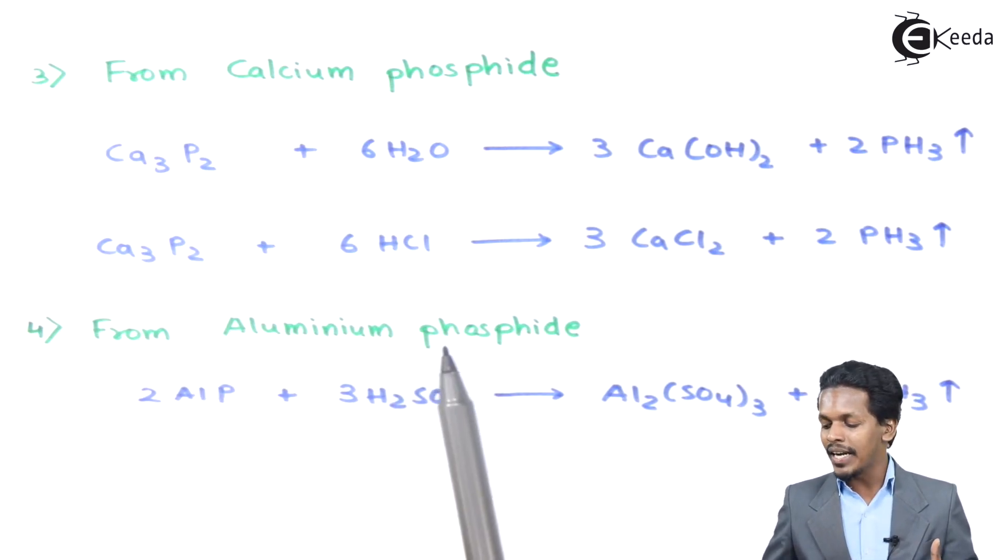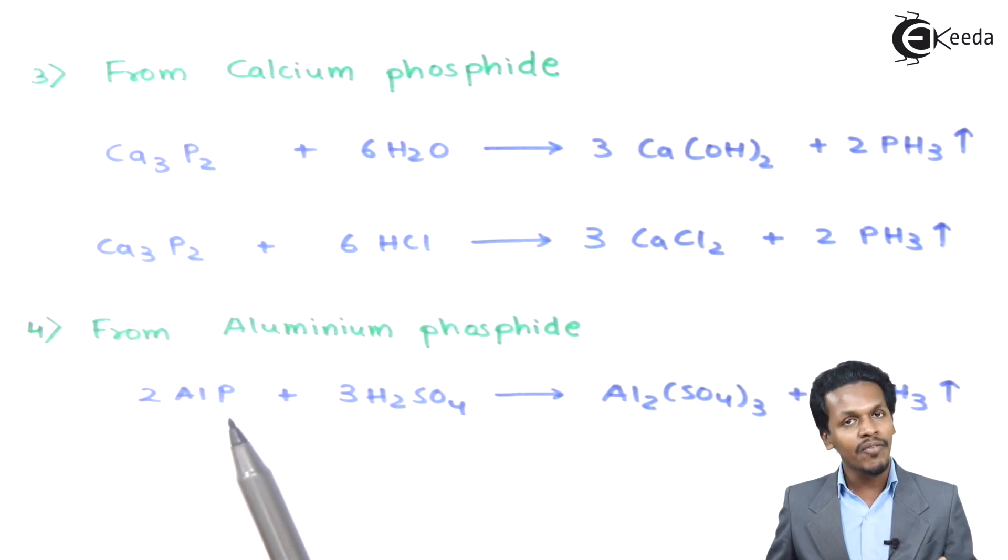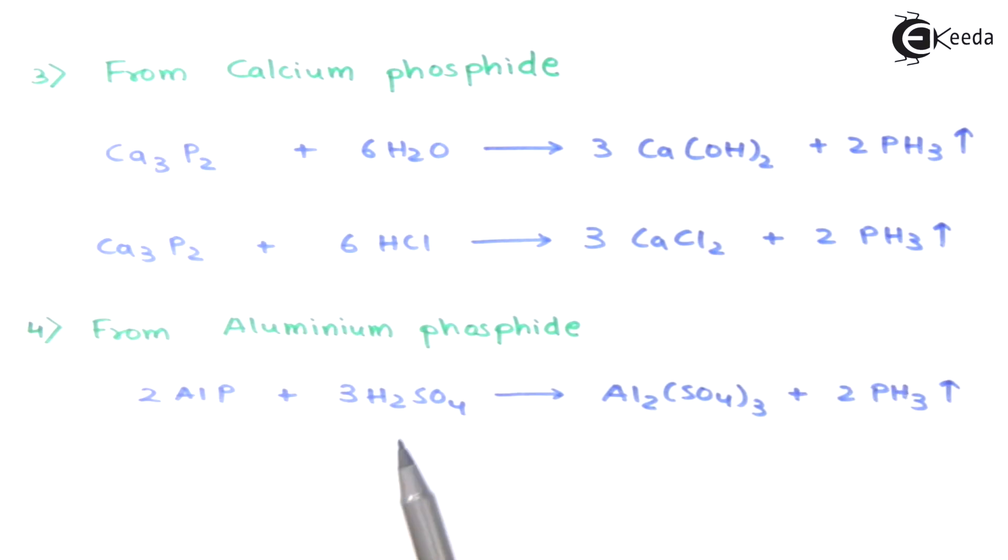It can also be obtained from aluminum phosphide. 2 moles of AlP, aluminum phosphide, whenever reacted with sulfuric acid H2SO4, the product we could get is a formation of a salt Al2(SO4)3, aluminum sulfate, along with 2 moles of PH3.